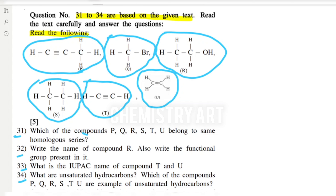You need prior knowledge about functional groups and homologous series. I can see unsaturation in one molecule — a triple bond is present, so this unsaturated compound is an alkyne. Here I can see Br, which means bromine. Carbon and hydrogen together form a hydrocarbon, but if any other element is present, it is called a functional group — so here the functional group is bromine. OH is also a functional group; O and H together make it an alcoholic functional group. Here only carbon and hydrogen are present without any double or triple bond, so this is an alkane. And here one triple bond is present, so this is an alkyne.